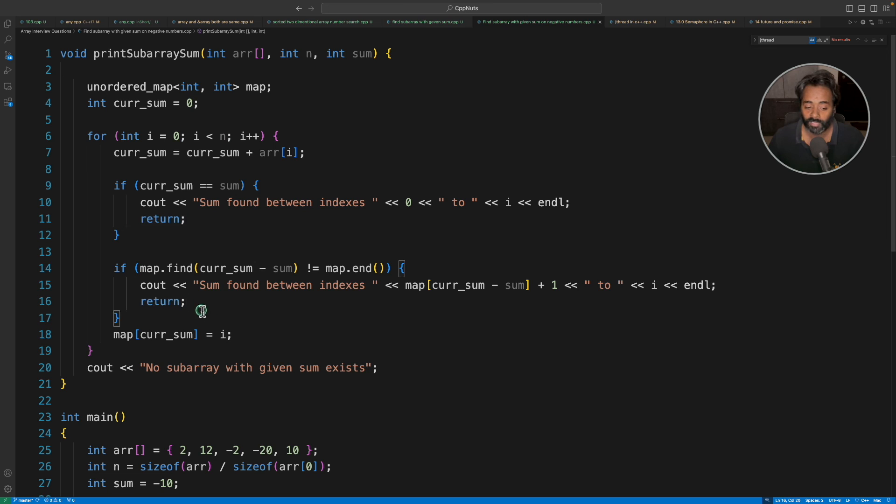Otherwise if this condition is also not true, we will insert the element. Key is going to be current_sum and value is going to be index.